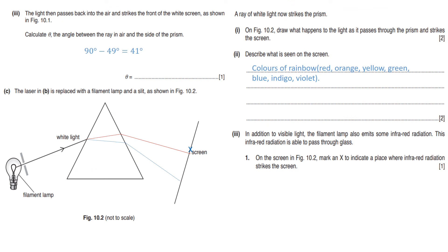The laser in part B is replaced with a filament lamp and a slit as shown in figure 10.2. The filament lamp produces light which, after passing through the slit and entering the prism, is split into its component colors. On figure 10.1, draw what happens to the light as it passes through the prism and strikes the screen. The light splits into its spectrum components, with red light at the upper portion and blue light at the bottom.